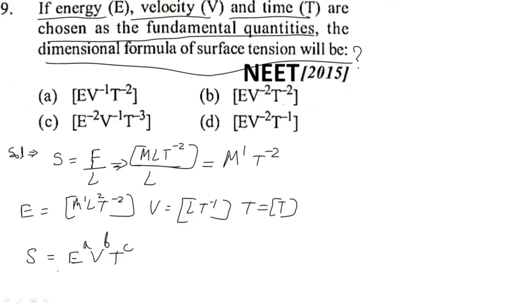Now putting all the dimensions, we can write M T⁻² equals ML² T⁻² to the power a, times L T⁻¹ to the power b, and T to the power c. Now equating all the powers of M, L, and T...